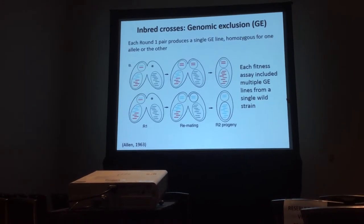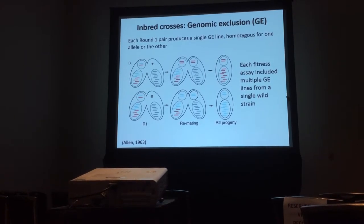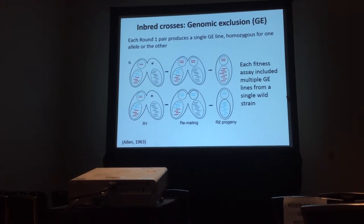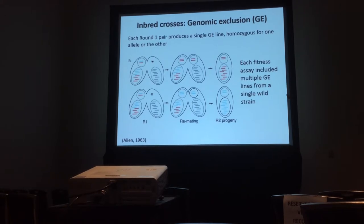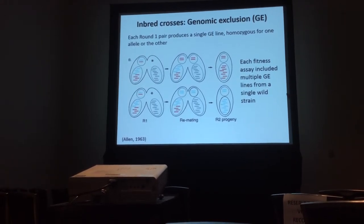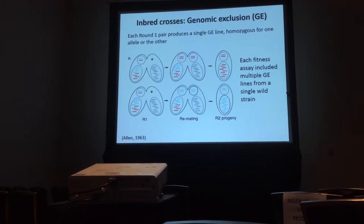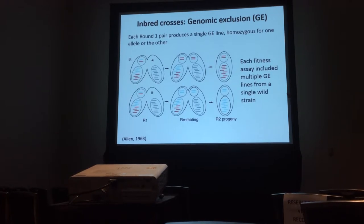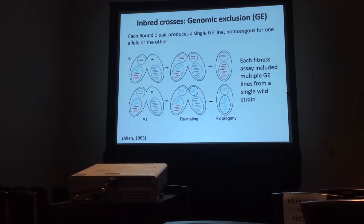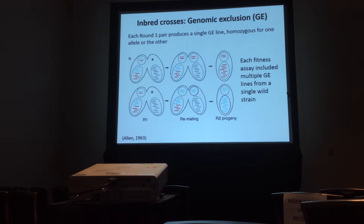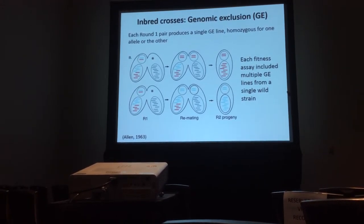So what are genomic exclusion lines? The process of genomic exclusion involves two rounds of mating. We take an individual wild strain, assuming it's heterozygous in at least its germline, and mate it with a star strain that has an inactive micronucleus. From that, offspring would have a homozygous micronucleus from one allele or another, and the macronucleus would be developed from the original parental micronucleus. By round two of genomic exclusion, you end up with a GE line that is purely homozygous for one allele or another. If there are multiple alleles, we did multiple GE lines to see if we could recover all the alleles that might be present.